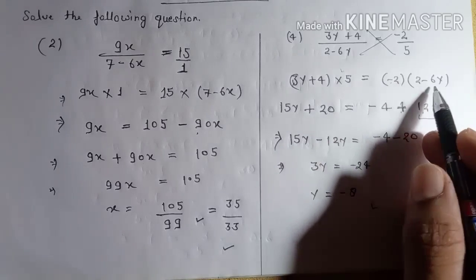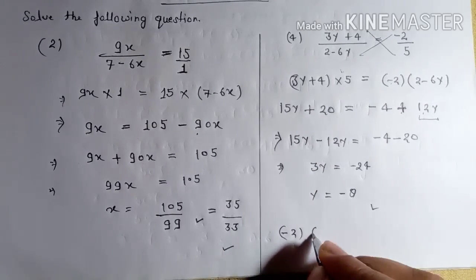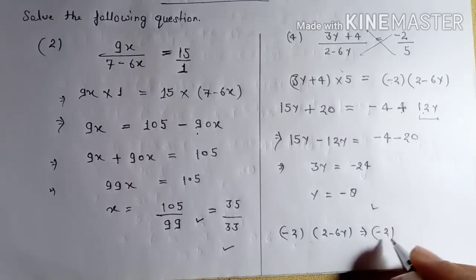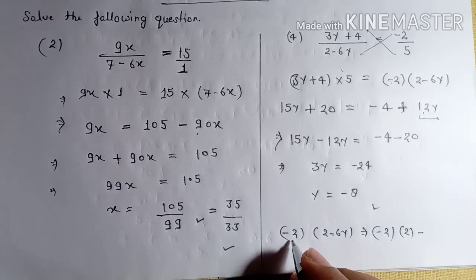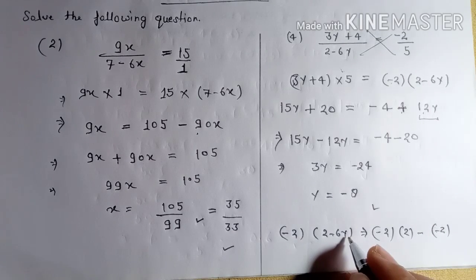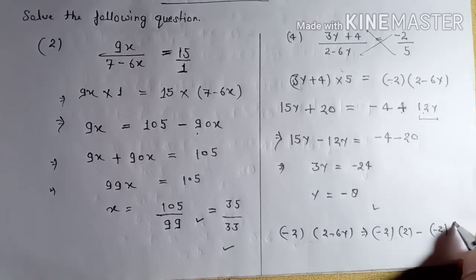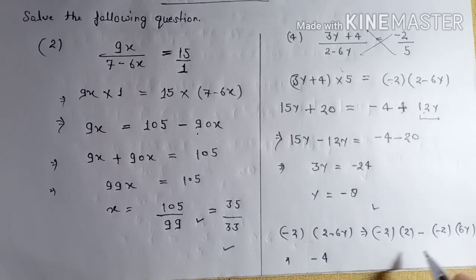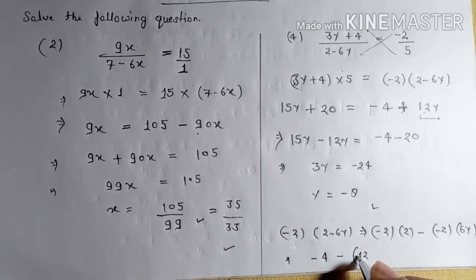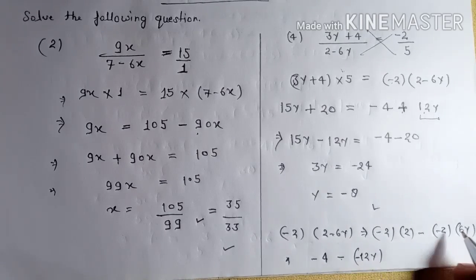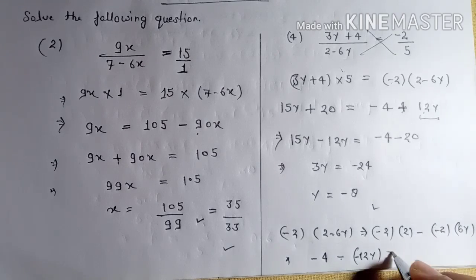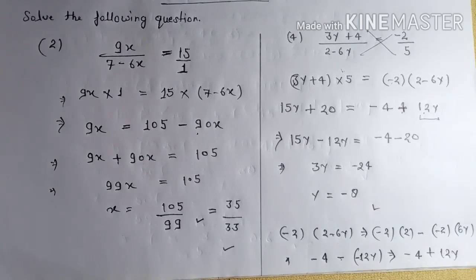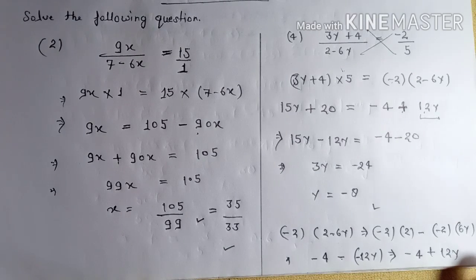If you are confused, here I'm explaining: minus two is multiplying two minus six y. I multiplied minus two and two to get minus four. And minus two multiplied by minus six y: the negative sign is there, and minus two times minus six gives plus twelve y. So the result is minus four plus twelve y, and this is your answer.